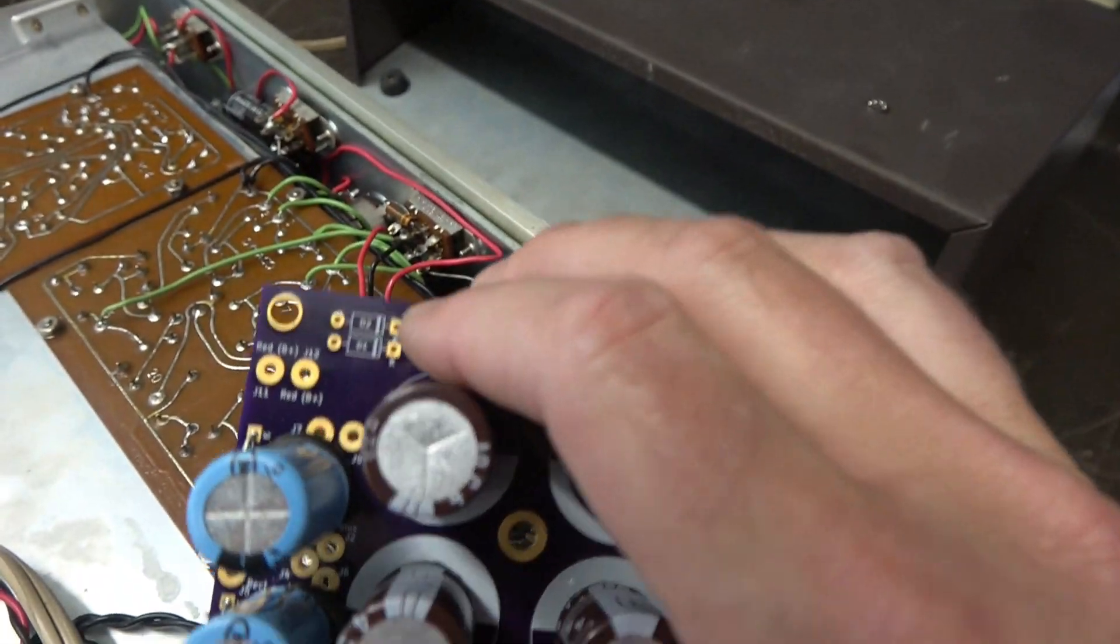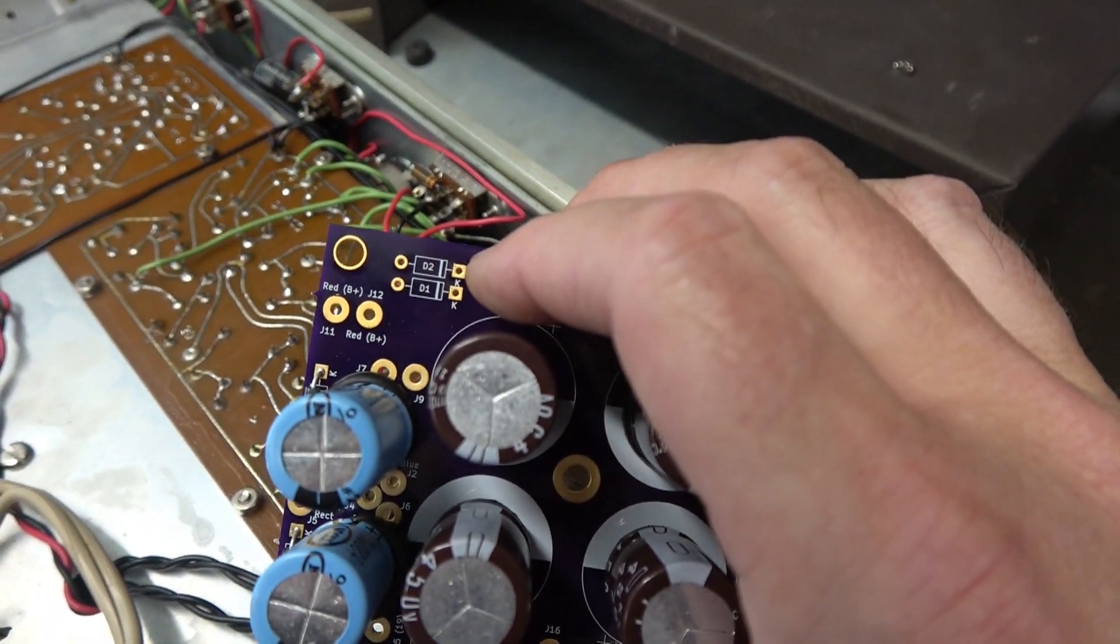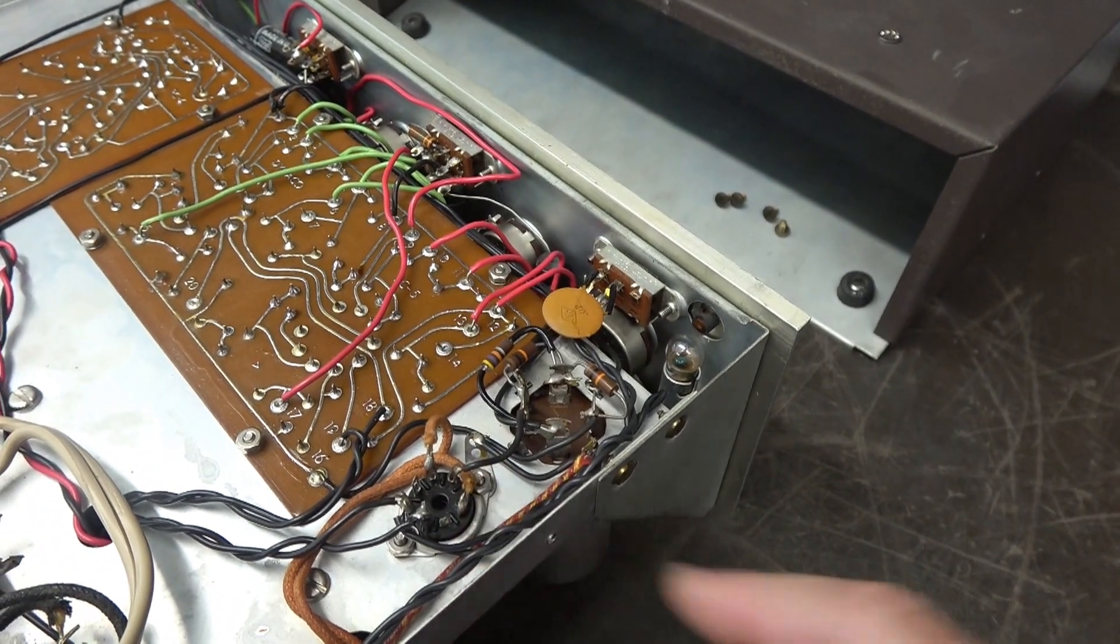I'm going to go ahead and reuse the rectifier tube. This board does have the option, you can put in diodes in place of that tube or you can run the tube. He's elected to keep it, so here we go.